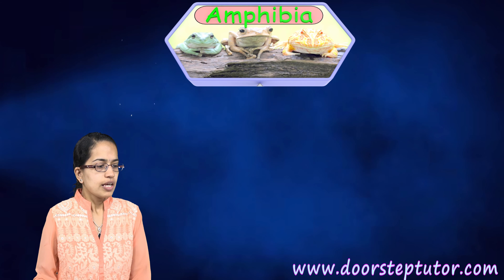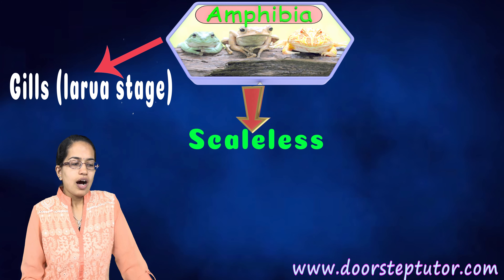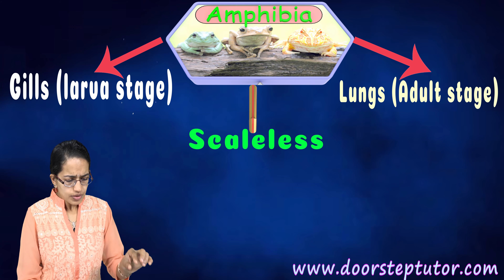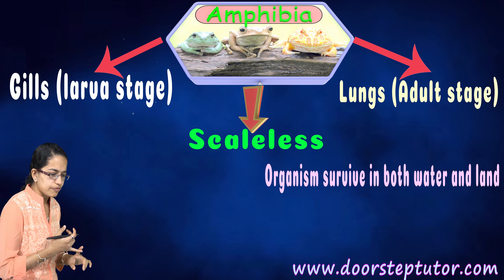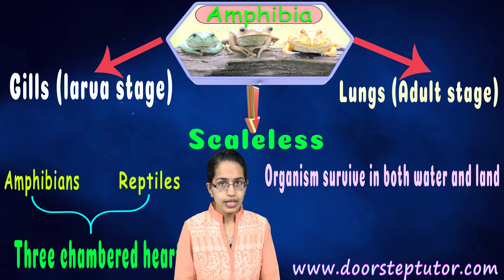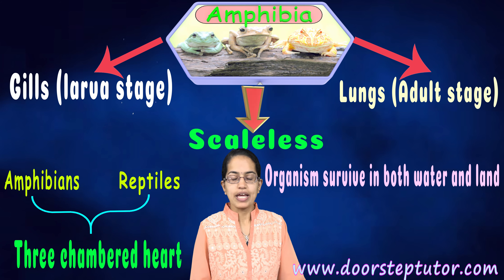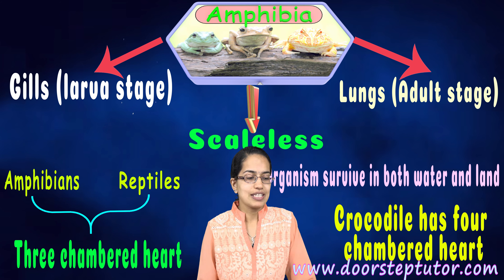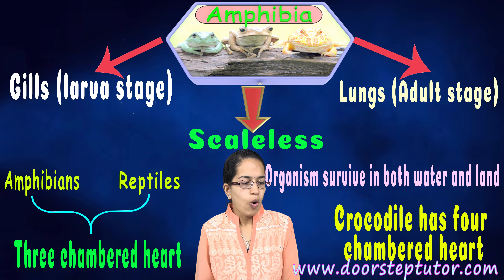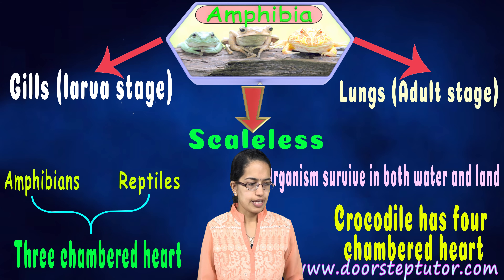Amphibians lack scales. In the larval stage they have gills, and in the adult stage they have lungs. They are interesting because they live both on water and on land. Amphibians and reptiles have a three-chambered heart. However, there is an exception under reptiles: crocodile is the only reptile which has a four-chambered heart. Beyond that, all aves and mammals have a four-chambered heart.